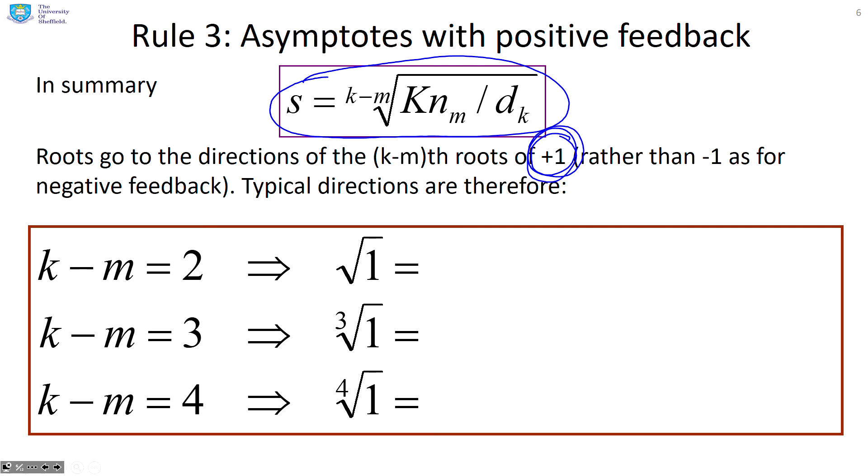So you're going to get slightly different directions. If the excess of poles over zeros is two, you get the square root of one, which is going to be plus or minus one, which is 0 degrees or 180 degrees as a direction.